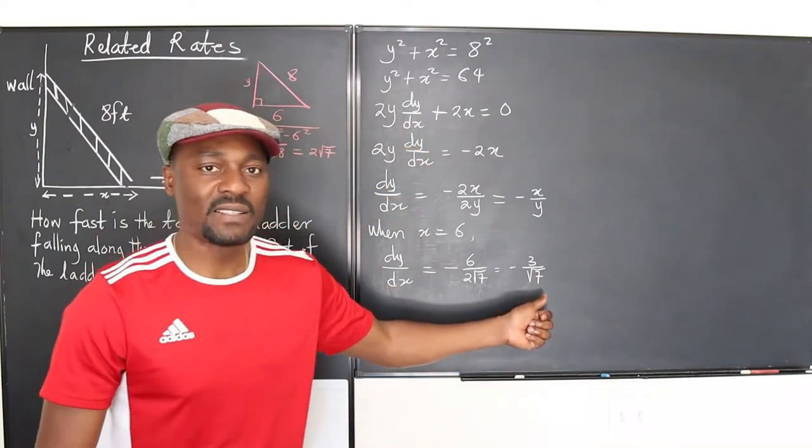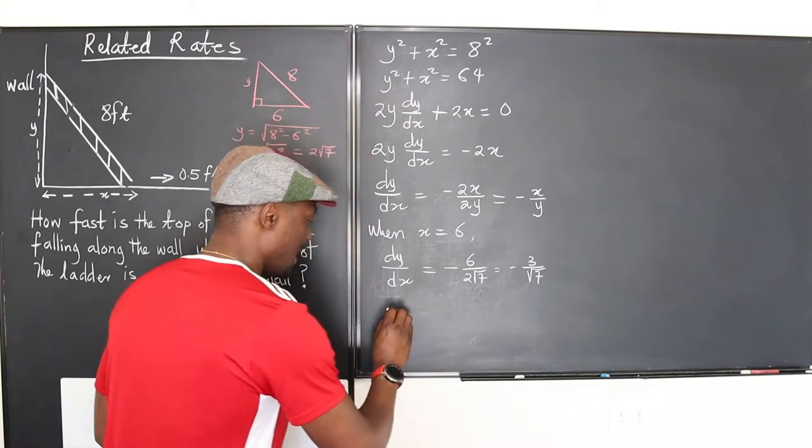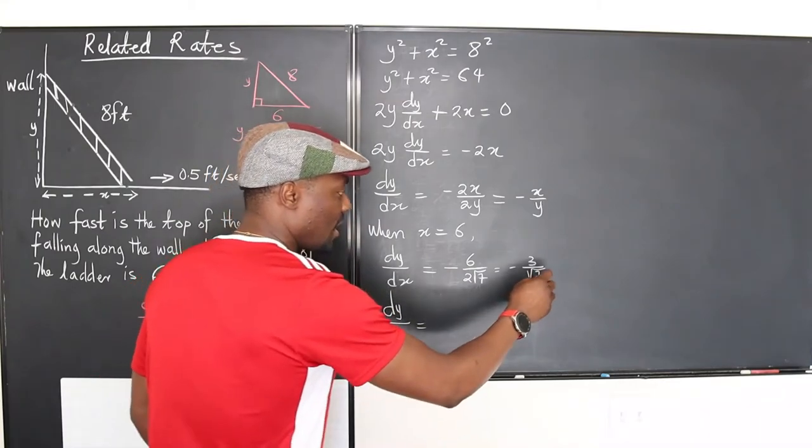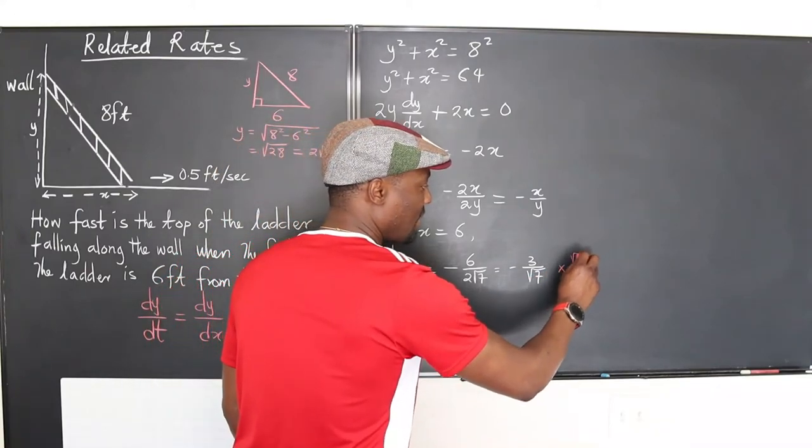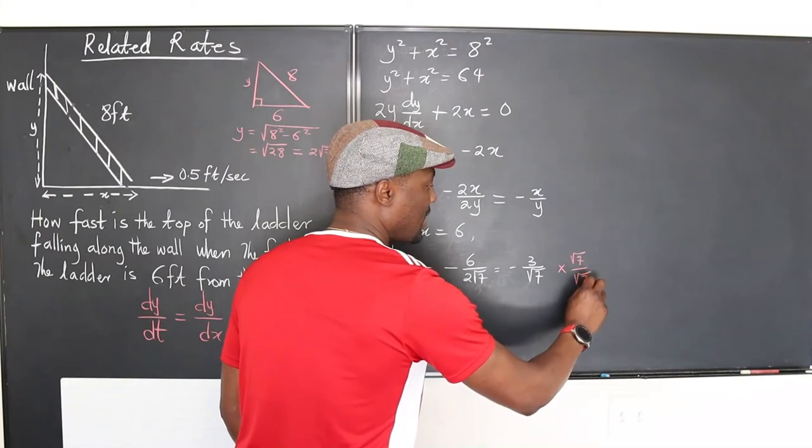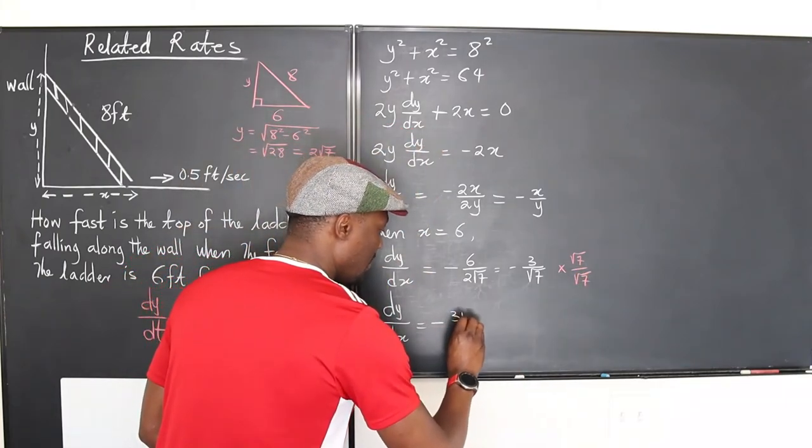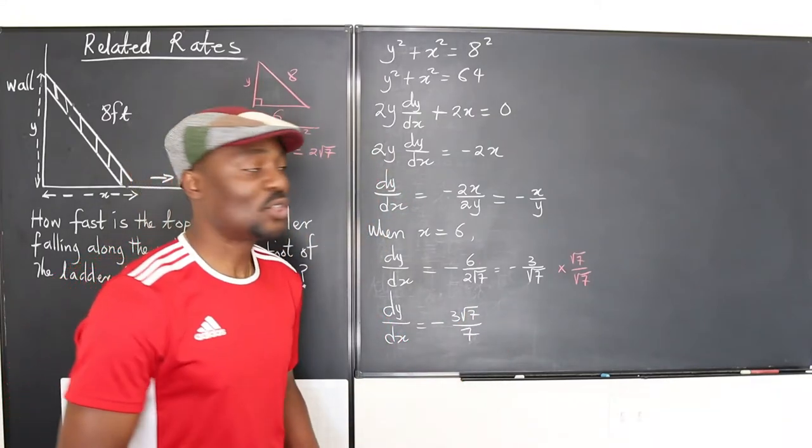You know negative 3 over √7, you can rationalize it. We have dy/dx equals—if you rationalize this, that means you multiply it by √7 over √7, and that's going to give you negative 3√7 over 7. That's dy/dx.